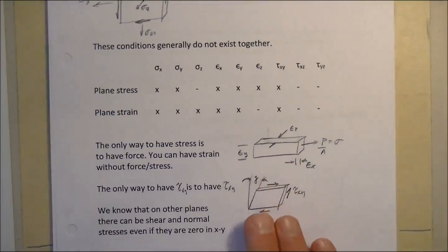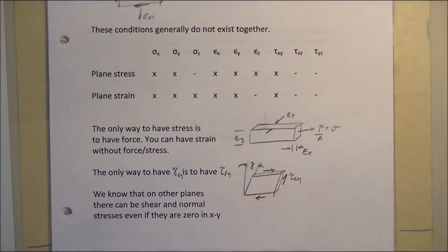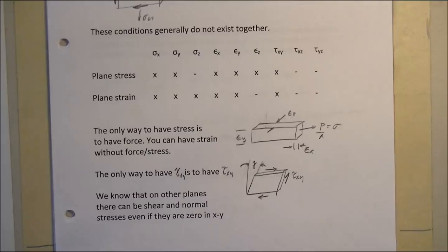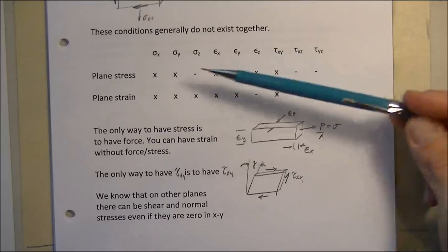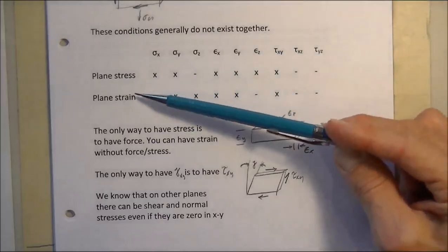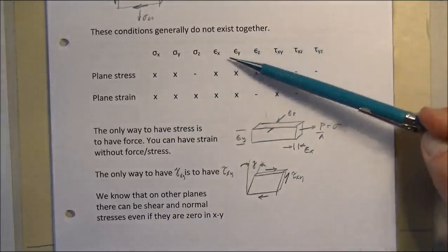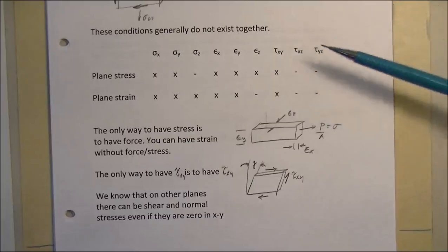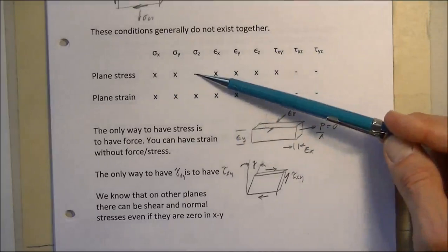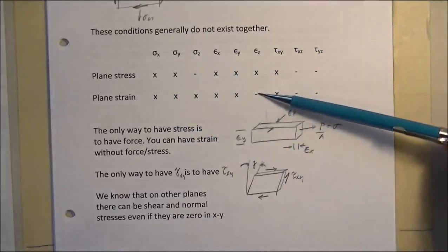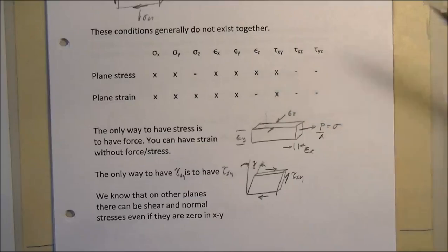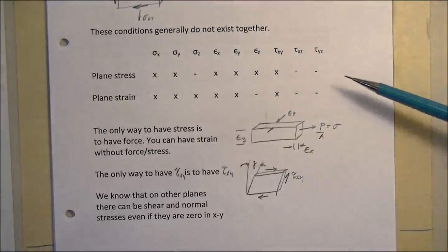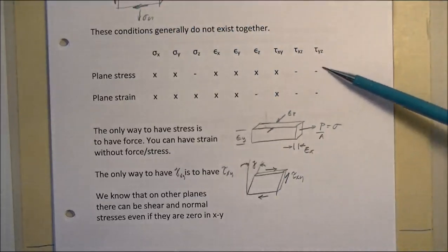Generally, plane stress and plane strain do not exist together, because in one case you're restricting movement and in the other you're not. Here is a matrix of how the stresses relate to the strains in x, y, and z, and how shear relates to these two scenarios. In plane stress we have no stress in z; in plane strain we have no deformation in z but we do have stress in z. In both cases we may have shear on the x-y face but no shear on the x-z or y-z faces.